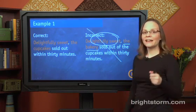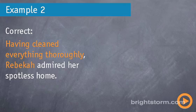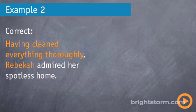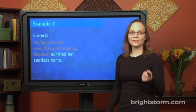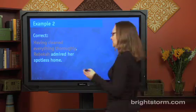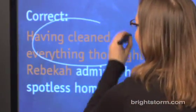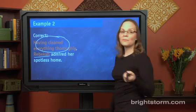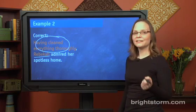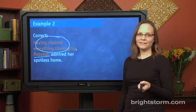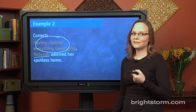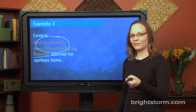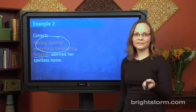Let's look at the second of our three examples. 'Having cleaned everything thoroughly, Rebecca admired her spotless home.' The modifier starts the sentence and describes the noun that immediately follows. The modifier is 'having cleaned everything thoroughly,' and that describes Rebecca — because indeed Rebecca cleaned everything thoroughly. That one's fine.